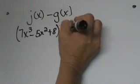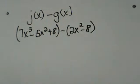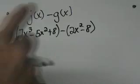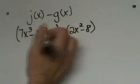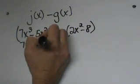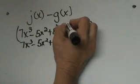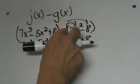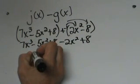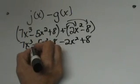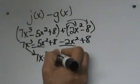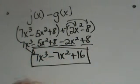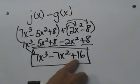We are going to subtract g, which is 2x squared minus 8. We have to be very careful with subtraction because we need to distribute that negative into the back function. I always change to addition and distribute. So I bring my 7x cubed down, my 5x squared and my positive 8. Then I make this plus a negative and distribute that negative into negative 2x squared, and that becomes a positive 8. Now combining like terms: 7x cubed comes down, negative 5x squared and negative 2x squared gives negative 7x squared, and positive 8 and positive 8 gives positive 16. So the final answer is 7x cubed minus 7x squared plus 16.